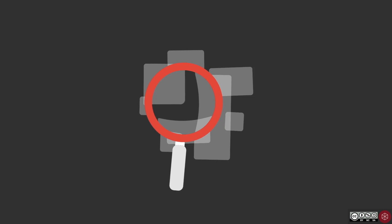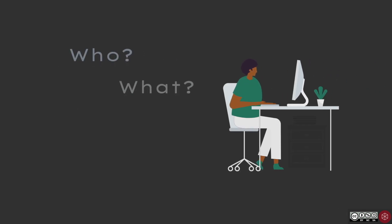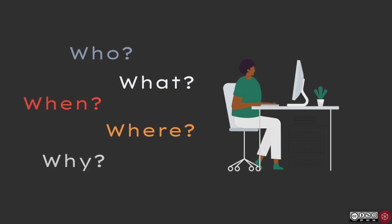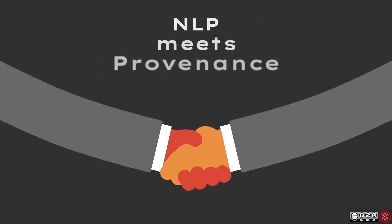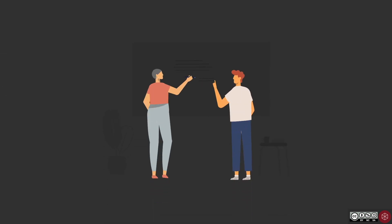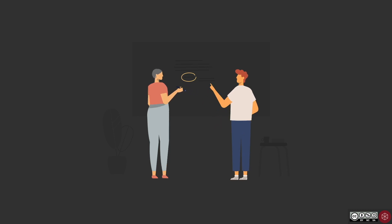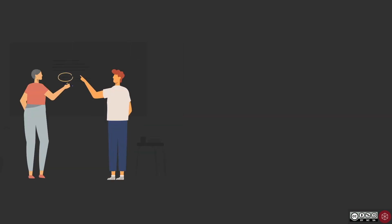NLP techniques are, however, extraordinarily helpful for historical research and journalism, where extracting information from sources is all part of the job. And this is where NLP meets provenance research. At least here at the Provenance Lab, we use natural language processing to extract knowledge from provenance texts. But what does that mean exactly? Let us guide you through an example.